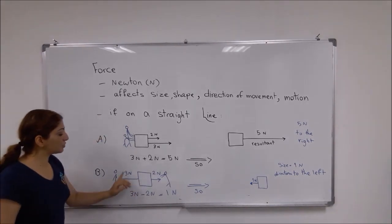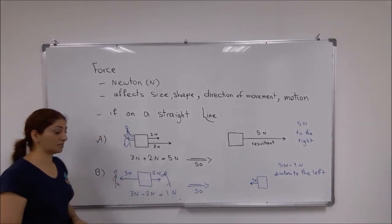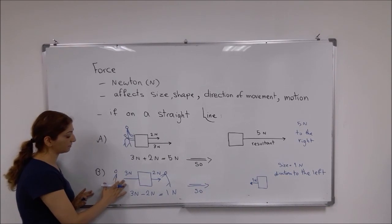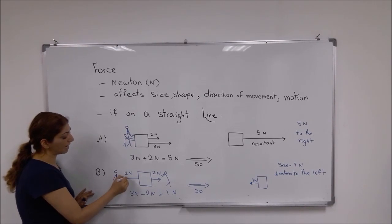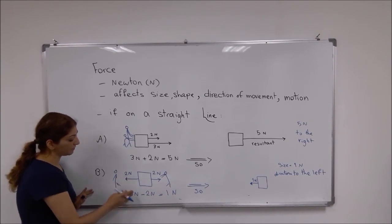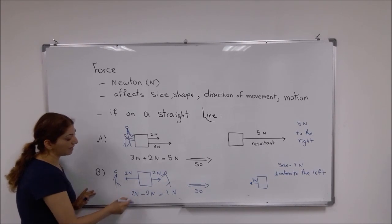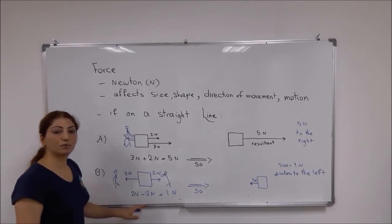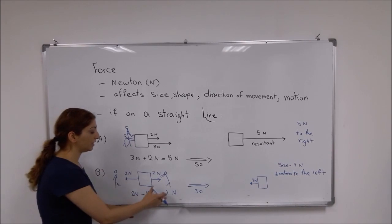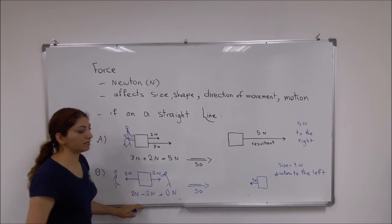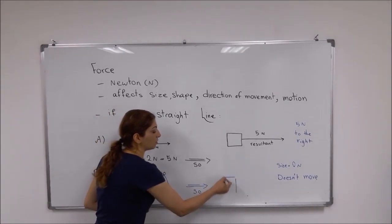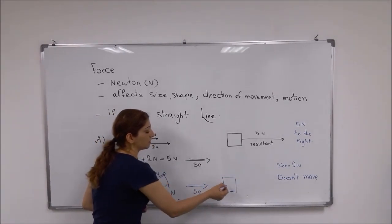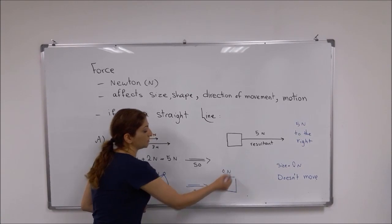If the two forces are the same size — for example, both are 2 Newtons acting in opposite directions — they balance out each other. The two forces balance each other, which means the resultant force would be 0. So the resultant force is 0 Newtons, and the box won't move at all.